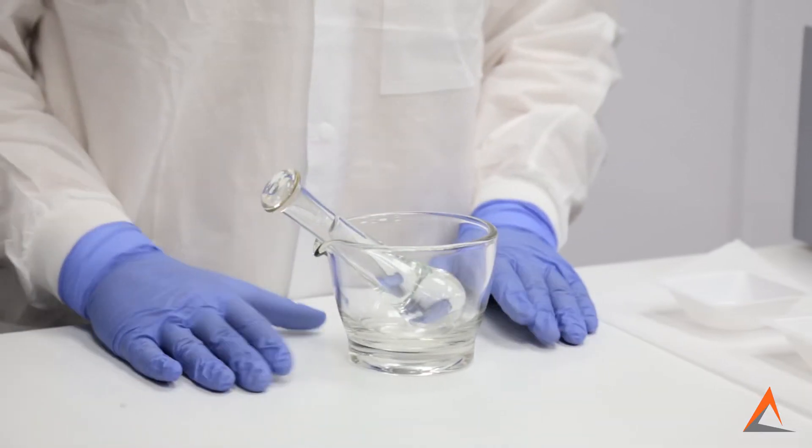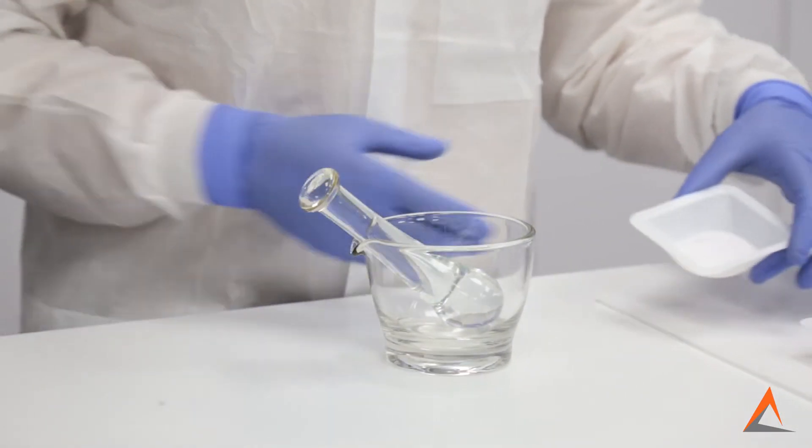The goal of triteration is to reduce the particle size of your powder ingredients. To correctly triterate your ingredients, you will need to apply sufficient force to effectively achieve the desired result.